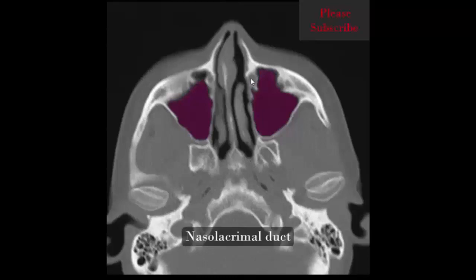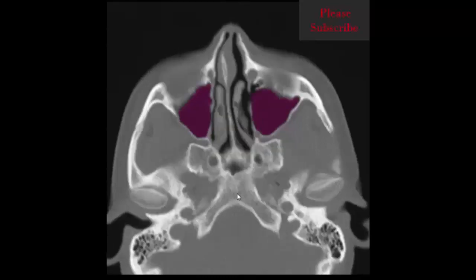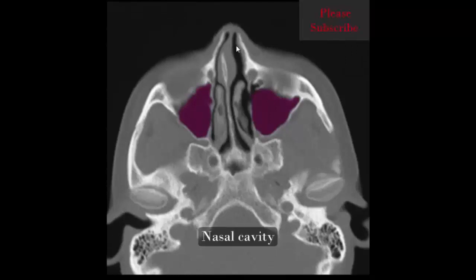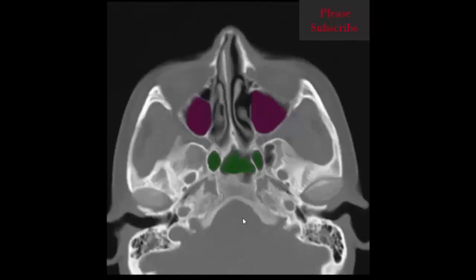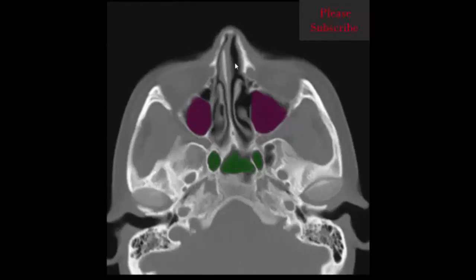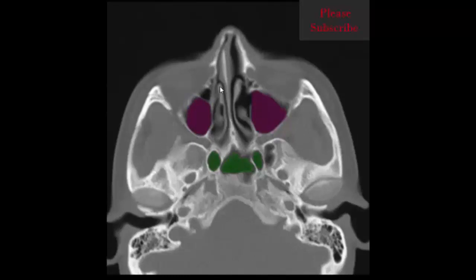Continuing upward, we identify the right and left maxillary sinus, nasal septum, nasal cavity, right and left maxillary sinus again, and right and left middle turbinate.